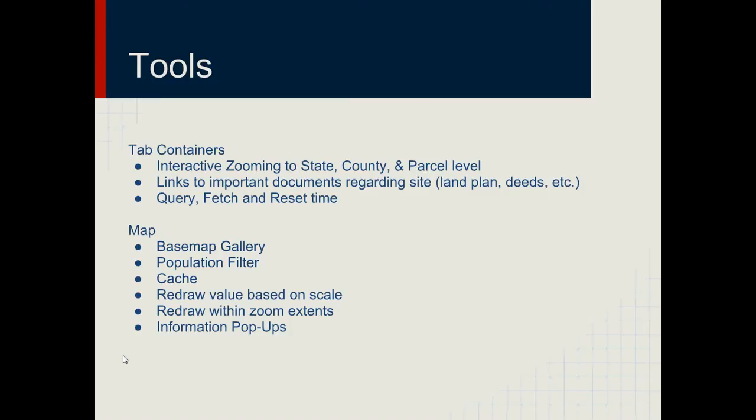Inside the tab containers, I have interactive zooming to state, county, and parcel level. There are links to important documents in the other tab regarding the site — land plans, deeds, anything you can imagine relating to how the project is progressing. Anything you get from the city, you can scan and upload as a PDF and put it in there. There's also a query fetch and reset timer to let you know how well your app is performing. Inside the map, there's a base map gallery so you can switch to whatever base map you want. There's a population filter — a slider tool I'll show you. The map caches itself to speed up performance, redraws values based on scale, and redraws within zoom extents, so it only draws what you see. That speeds everything up, especially with so many records. There are also information pop-ups for every level — state, county, and parcel.